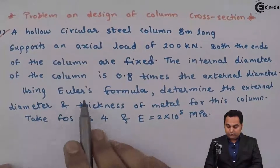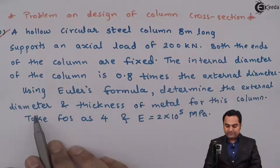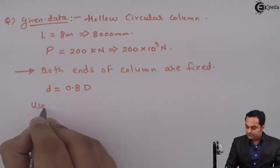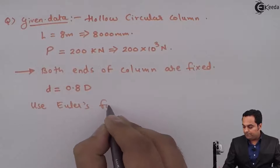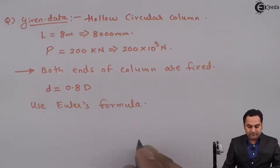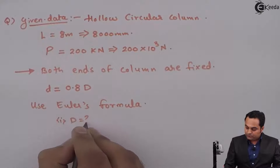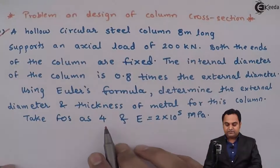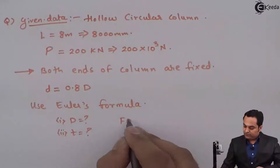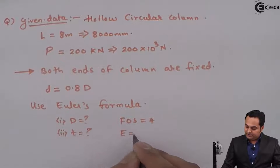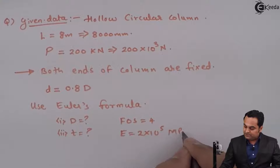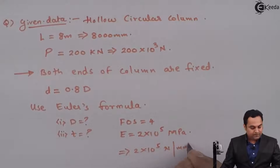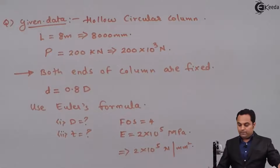Using Euler's formula, we have to determine the external diameter and thickness of metal for this column. The factor of safety is 4, and Young's modulus E is 2×10⁵ megapascal, that is 2×10⁵ Newton per mm².